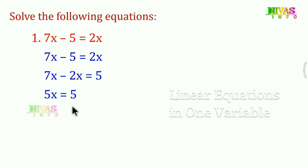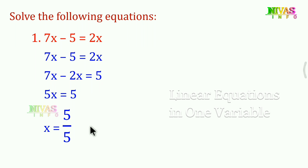Only one value: x is equal to 5 upon 5. The 5 cancels, so we have only 1. The x value is 1.